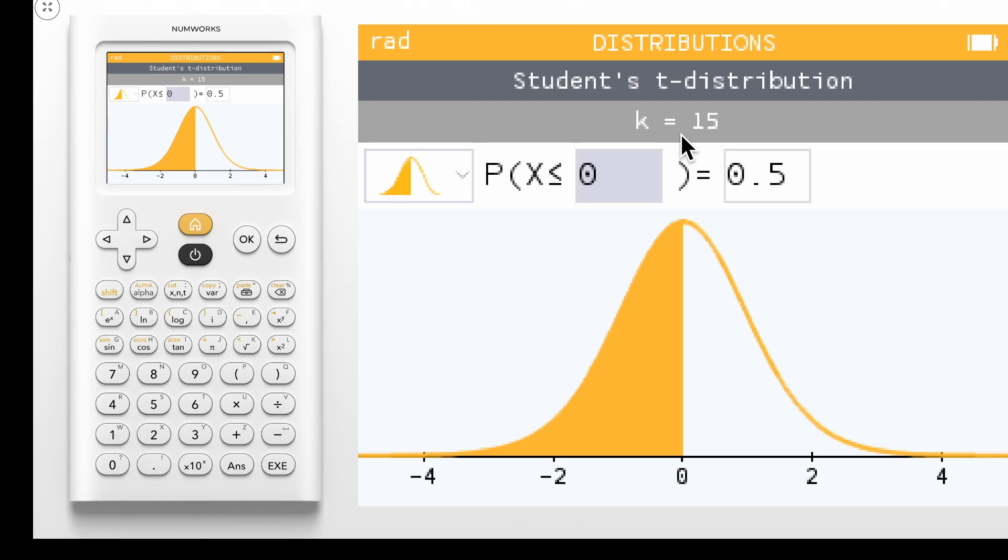We also have an editable probability statement so that we can calculate the probability that x is less than or equal to negative 1.5.